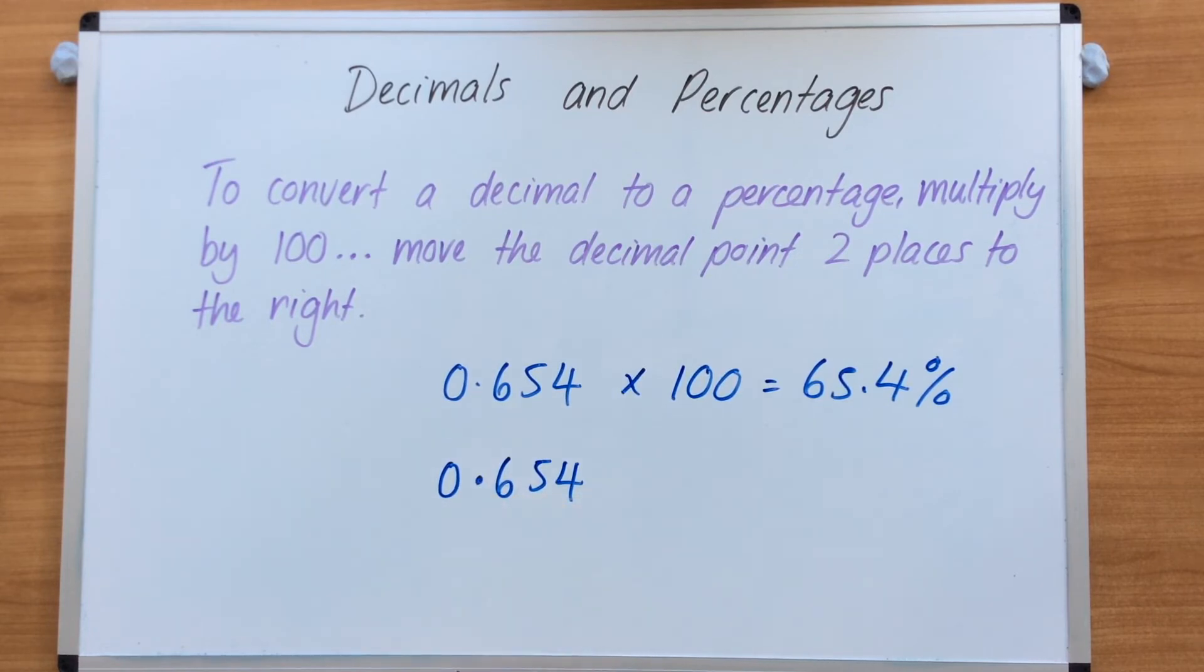This is our decimal place. We're going to multiply by 100. We're going to move the decimal point two places to the right-hand side. So we jump two times. Two zeros, two times to the right. One, two. New decimal place down there.